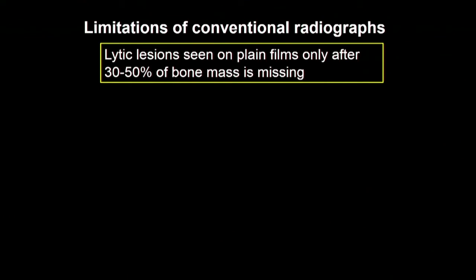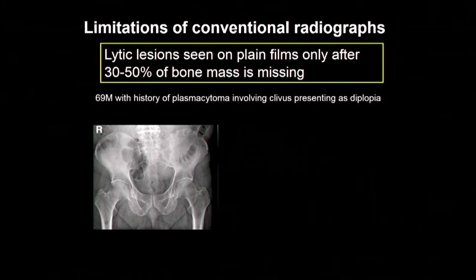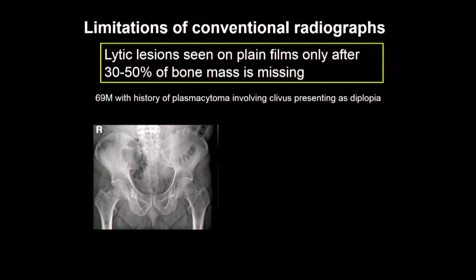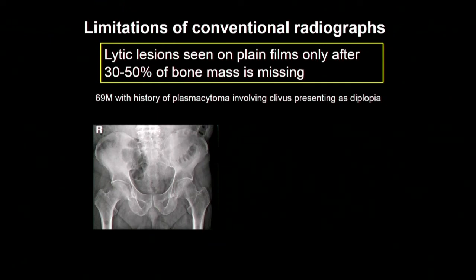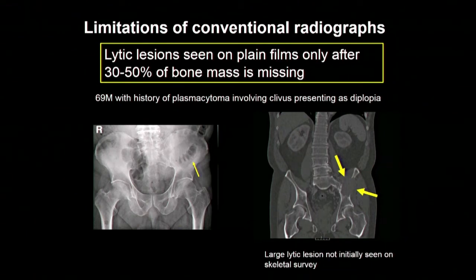Here's one example of a patient who presented with a myeloma lesion involving the clivus, which is the bone at the base of the skull. He presented with double vision because the lesion was pushing on one of the nerves controlling the eye muscles. Initially it was felt to be a solitary lesion, and he had a skeletal survey that did not show any other findings. However, a few months later he presented with hip pain, and there was actually a large lesion in the left pelvis that wasn't well appreciated on the skeletal survey. This illustrates how with more sensitive imaging you can pick up things not present on this older technology.